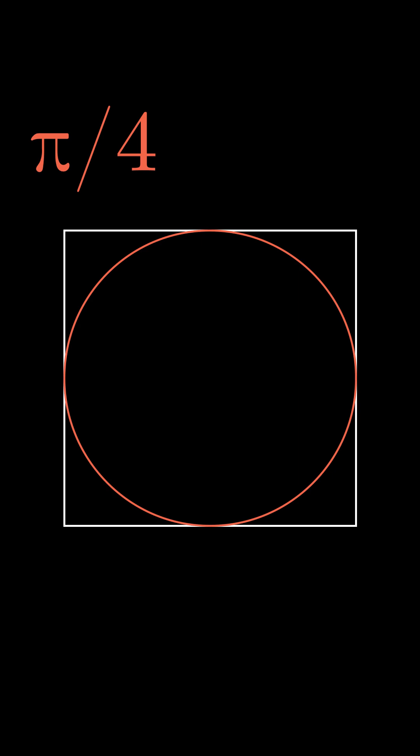That means pi can be estimated by multiplying the value you get from the second method by four. And there you have it.